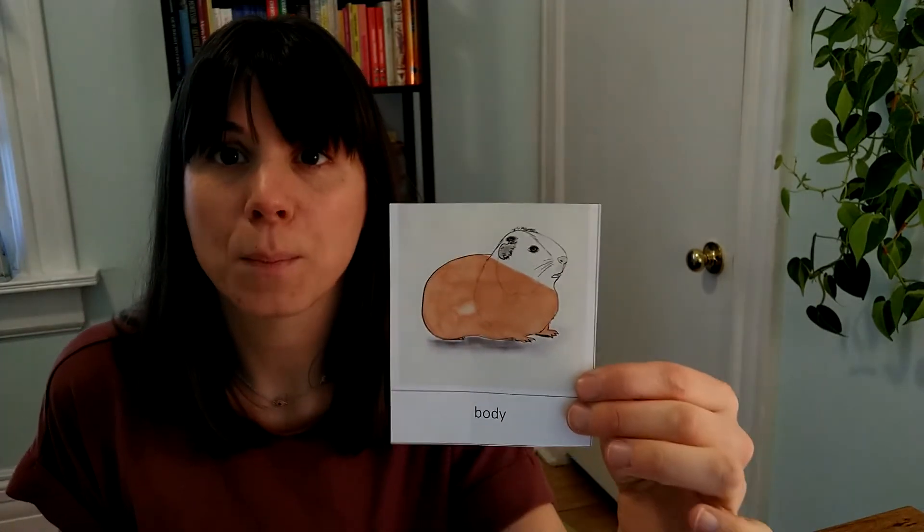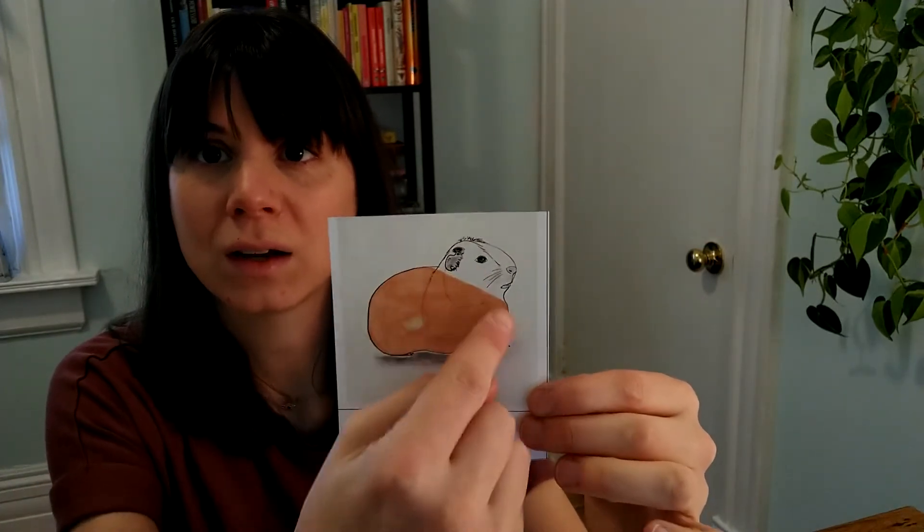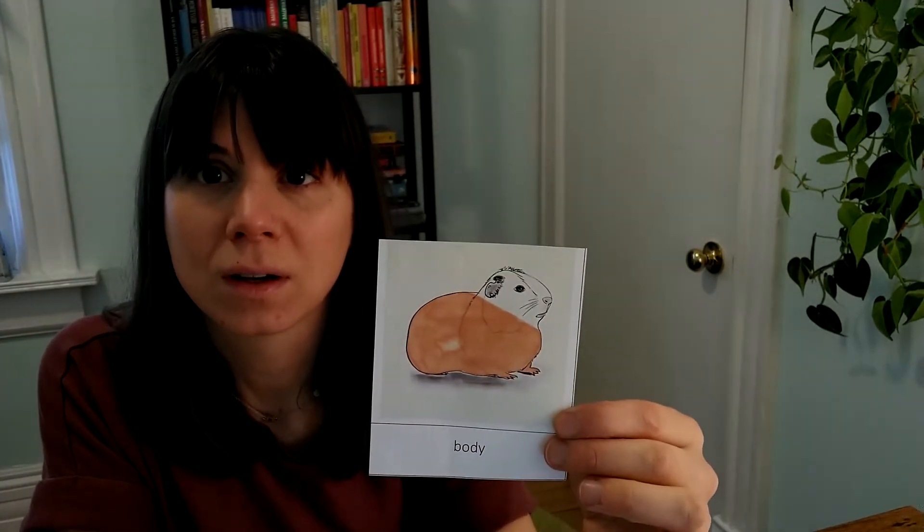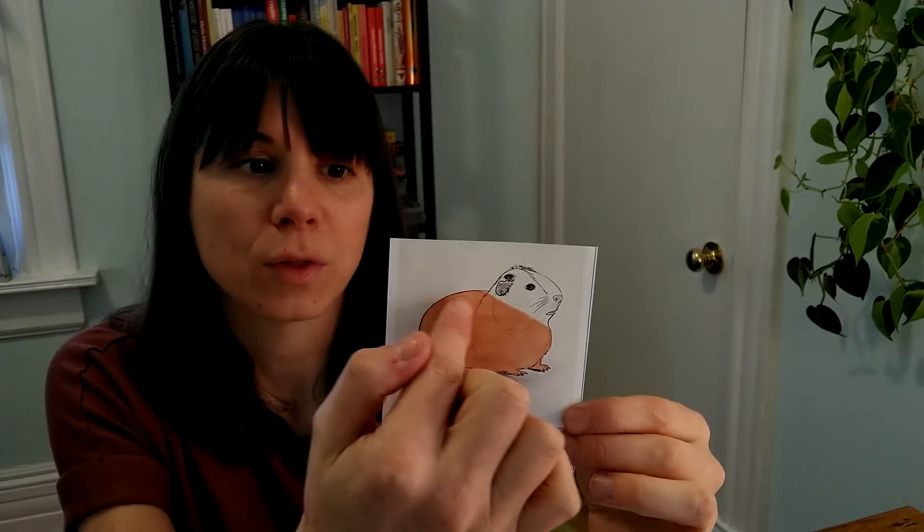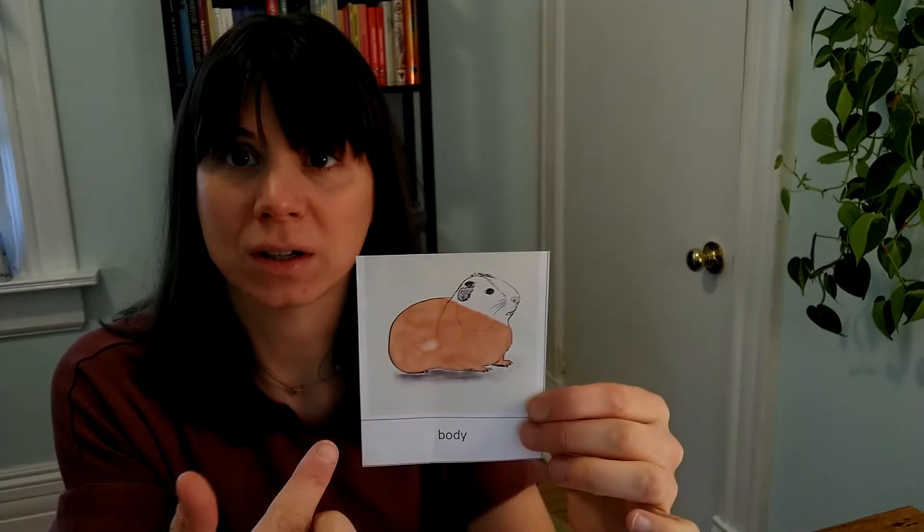This is the body of the mammal. So it is this part here that includes kind of the back and the stomach, and that is where the limbs are attached. And so we also can call this the trunk. In humans, it would be here from our shoulders down to our hips. So it's kind of what your legs and arms are attached to.